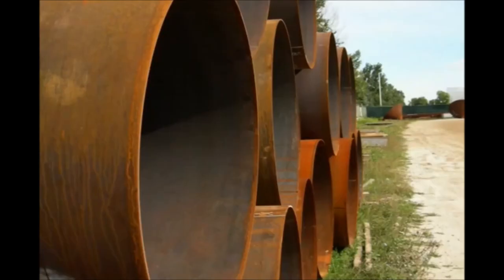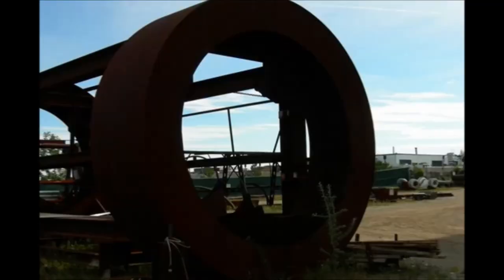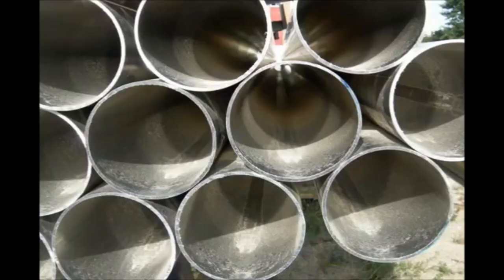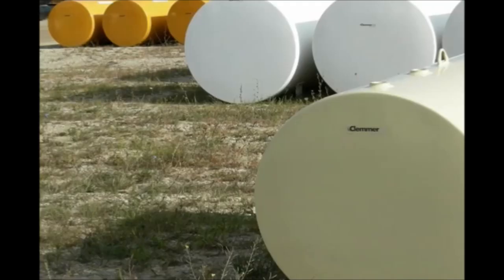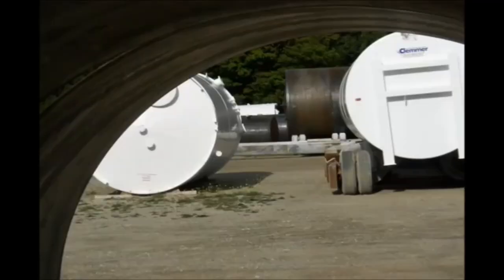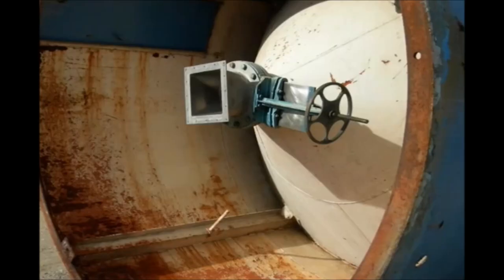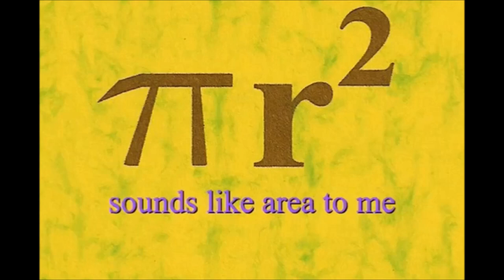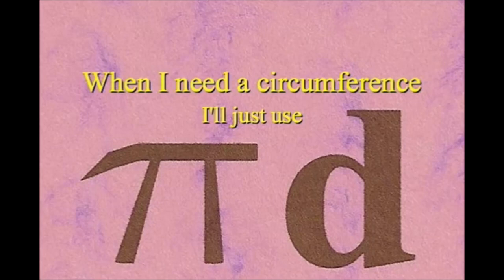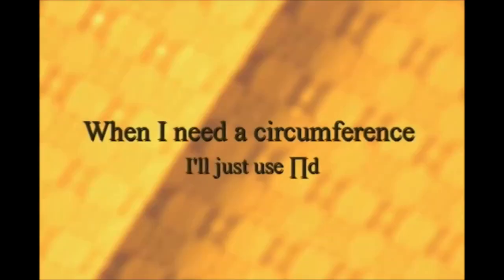Here is a circle, it knows how to get around. It has a radius from center to rim. And its diameter's a line that goes from side to side while passing through the center, now isn't that simple. Pi r squared sounds like area to me, when I need a circumference, I'll just use pi d.